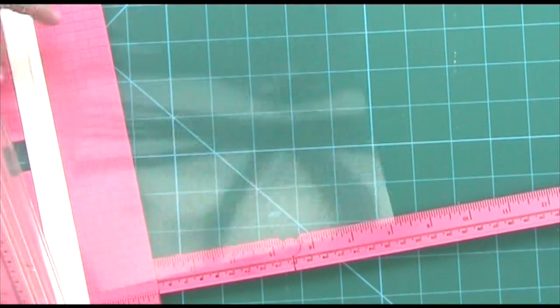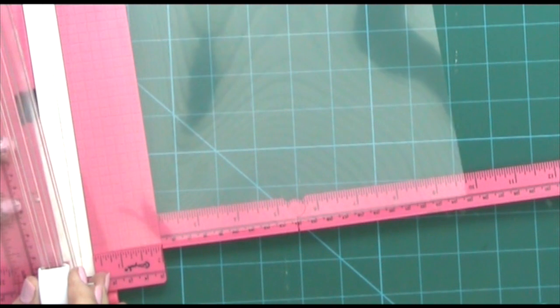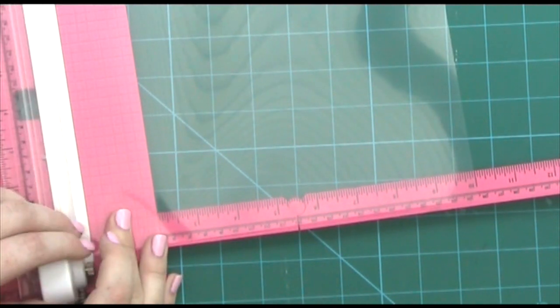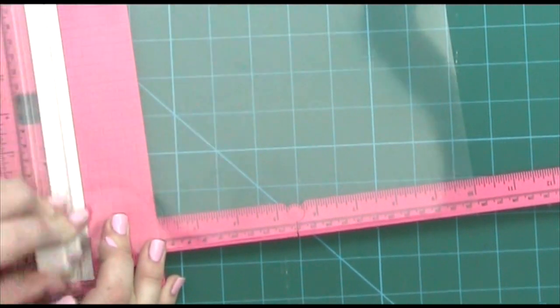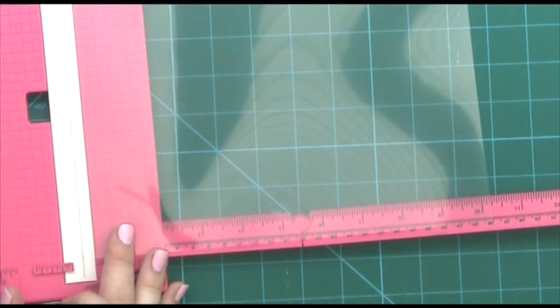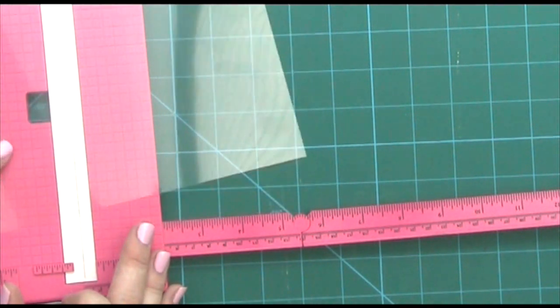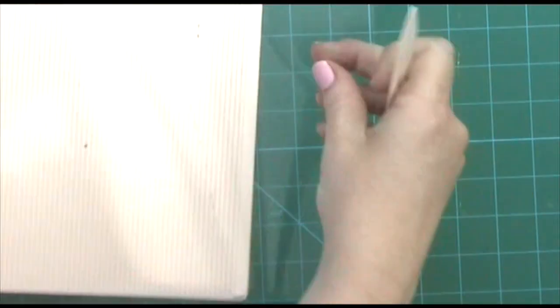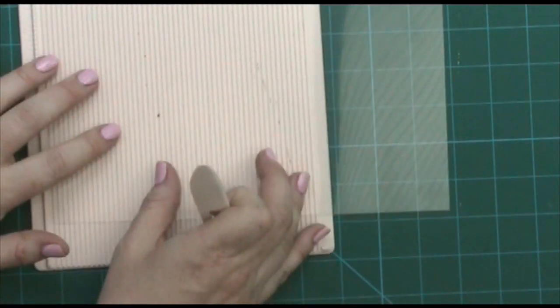So I'm going to take that and cut it to ten inches so that when it's scored in half it will be five inches across and then seven inches on this side and score it down at the five inch mark.